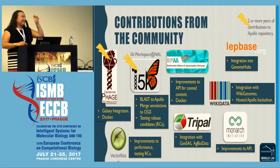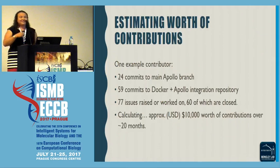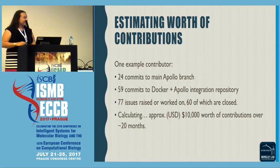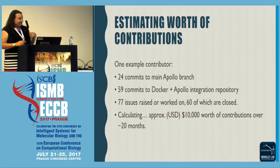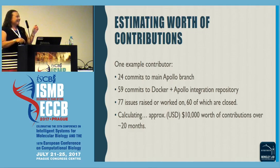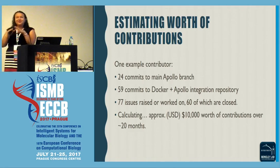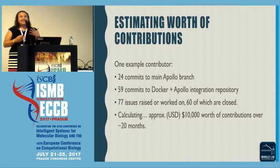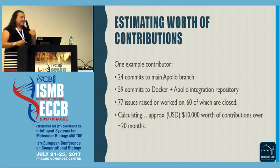The ones highlighted with a lightning bolt have been working with us for more than two years — and we're not paying anyone to do this; this comes from their own ideas. To give an example of how collaborators have contributed: one person has done about 30 commits on our main branch, about 60 commits to the Apollo Docker repository, and raised approximately 80 issues, most of which have been closed. If I calculate conservatively what an hour of that time would be worth, we're talking about approximately $10,000 US dollars in contributed time over the past 20 months — and that's just one person from the community.